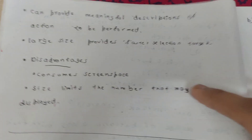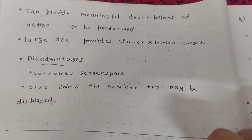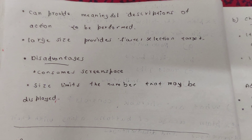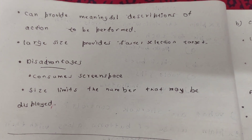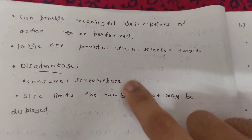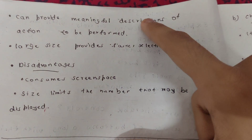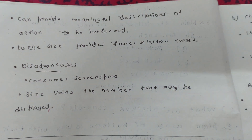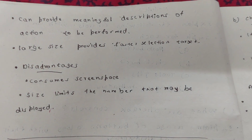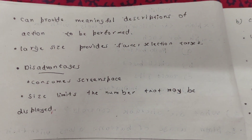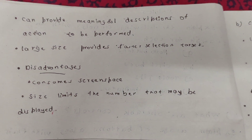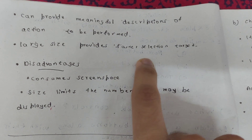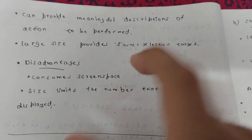Another advantage is that a button provides a meaningful description of the action to be performed — it is written clearly on the button to indicate its purpose. Additionally, buttons provide faster selection, allowing the user to click directly to perform an action.